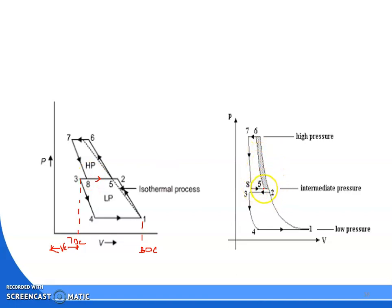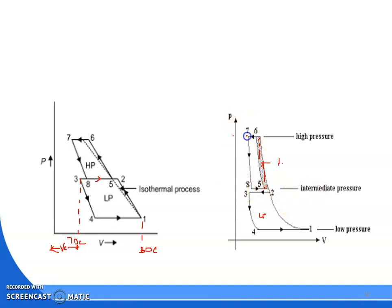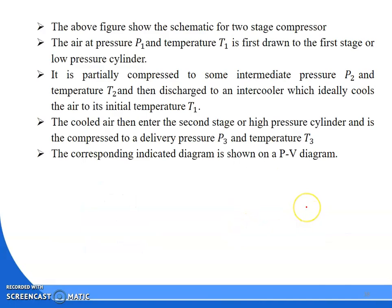Because of intercooling, this much work — represented by the hatched area — will be saved. This is the low-pressure cylinder work, and this is the high-pressure cylinder work. This pressure is known as the intermediate pressure, this is the delivery pressure, and this is the suction pressure.